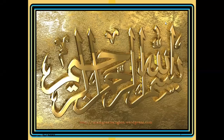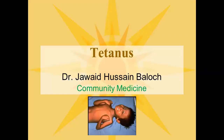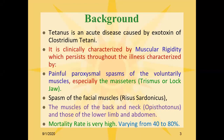Today we are going to discuss an important disease: tetanus. Tetanus is an acute disease caused by the exotoxin of Clostridium tetani. It is clinically characterized by muscular rigidity which persists throughout the illness, characterized by painful paroxysmal spasm of the voluntary muscles, especially the masseters, leading to trismus or lockjaw.